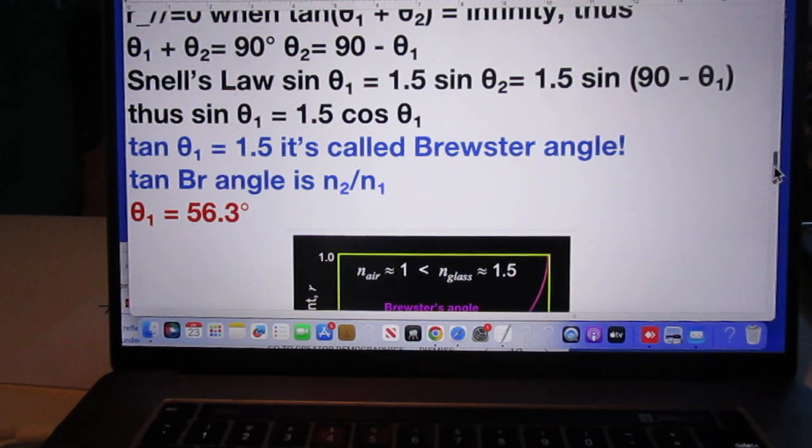The angle theta 1 for which that happens is 56.3 degrees. And that is called the Brewster angle. So, when you reflect unpolarized light off glass at an angle of incidence of roughly 56.3 degrees, the reflected light is 100% linearly polarized in the direction perpendicular to the plane of incidence.